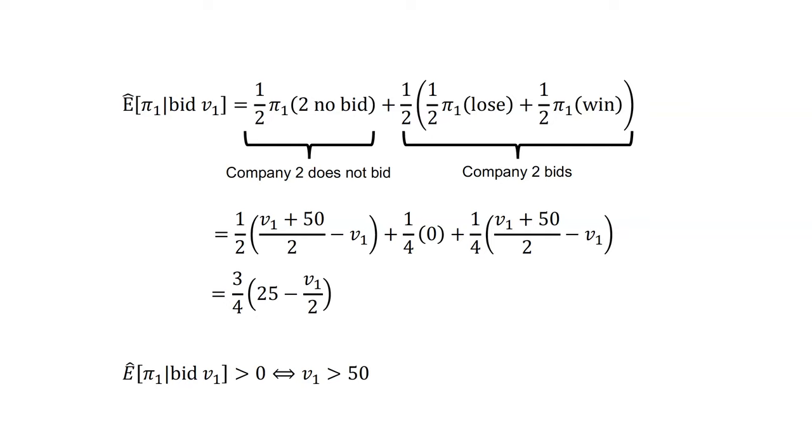However, as we showed in the previous video, this bidding approach leads to, on average, a loss. Company 1 underappreciates that Company 2 is more likely not to bid when Company 2's information is bad. Therefore, Company 1 underappreciates the extent to which winning the auction is bad news.